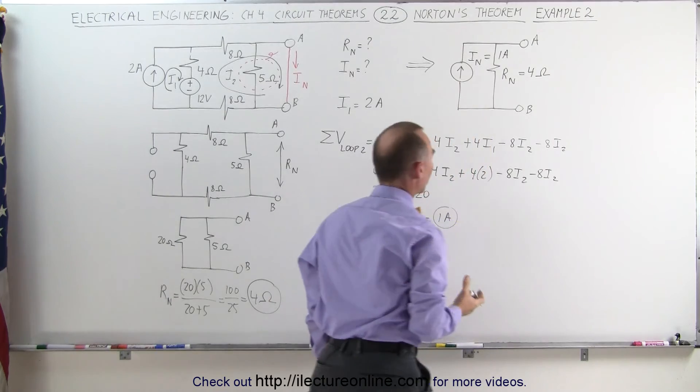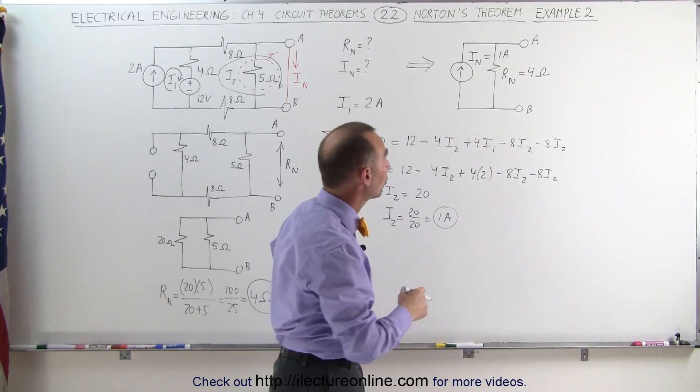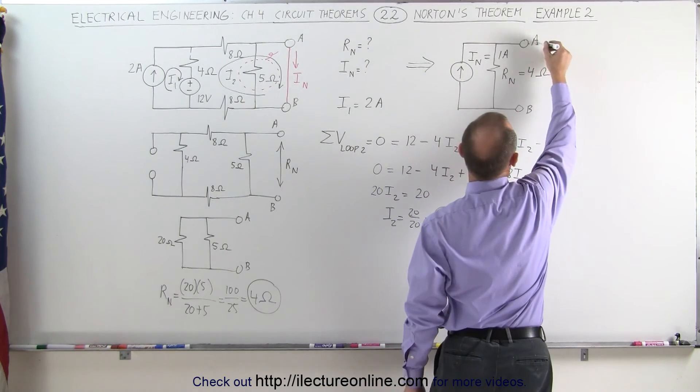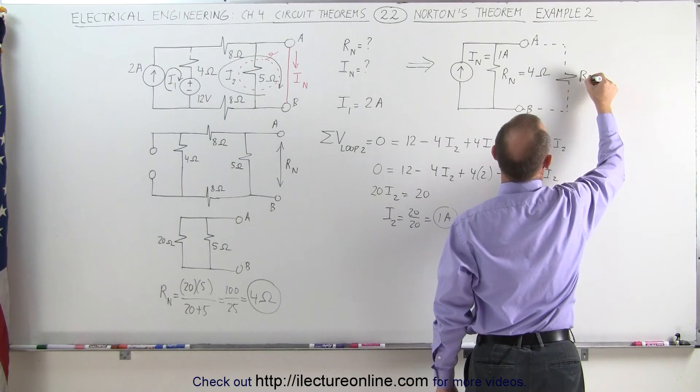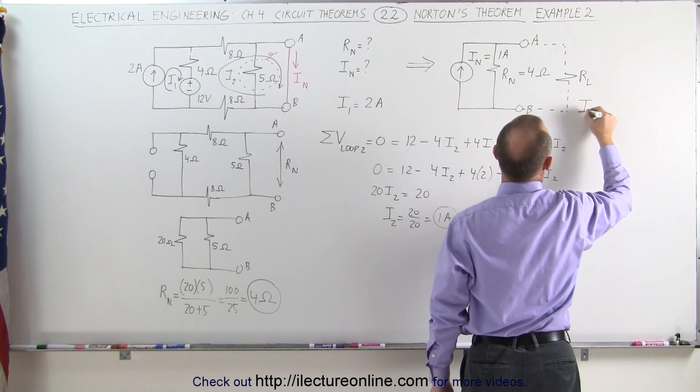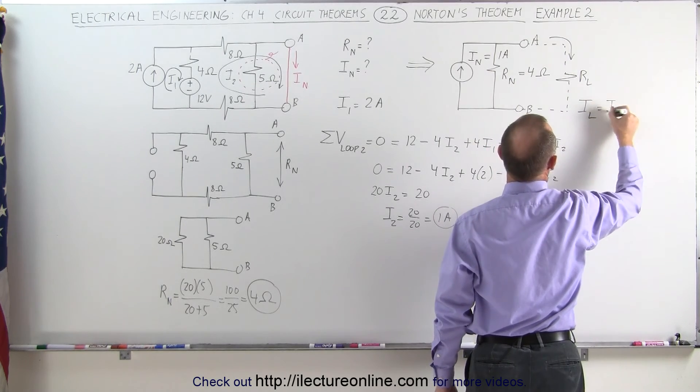And now we have our equivalent circuit which allows us to find the current to the load resistor once we connect this to a load resistor. Let's say we have a load resistor like this. R sub L.